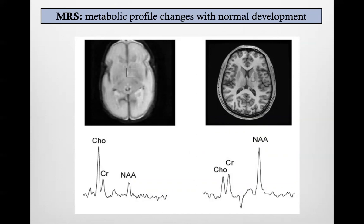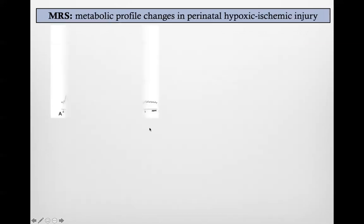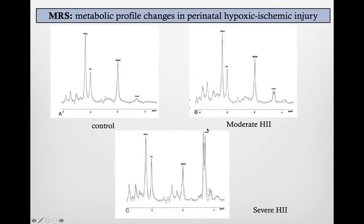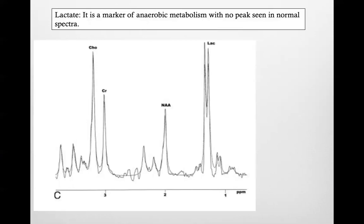In the neonatal brain, the number of functioning neurons is less, so NAA is lower physiologically compared to an adult, while choline is quite high because this is a fast-developing brain. In moderate hypoxic-ischemic injury, a new peak appears: lactate, which signals anaerobic metabolism. In severe HIE, the lactate peak is very large. Lactate is always pathological — it is elevated in necrotic areas like high-grade tumors, cerebral abscesses, diffuse axonal injury, and hypoxic-ischemic injury. Any serious pathological process can increase lactate.